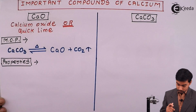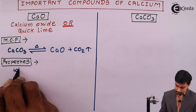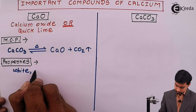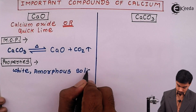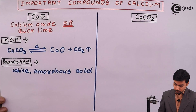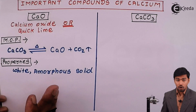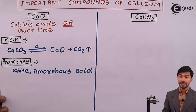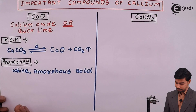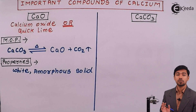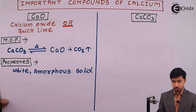Let us move towards the properties of quicklime. Calcium oxide is a white amorphous solid. Amorphous means it cannot completely dissolve in water. Just by seeing the oxide, we can understand that it is water insoluble. This is one of the important things to remember in case of the properties of calcium oxide.